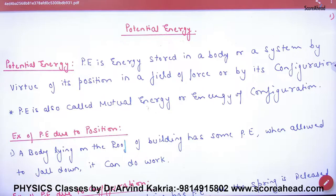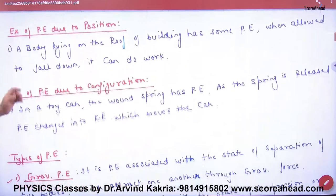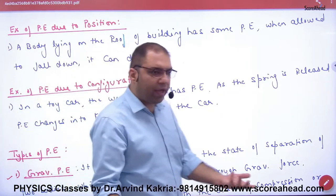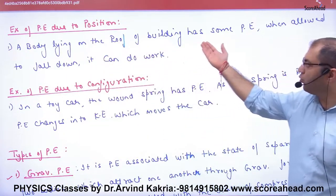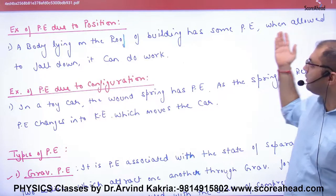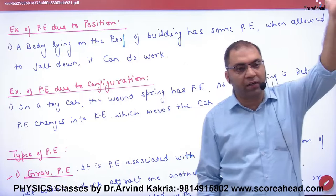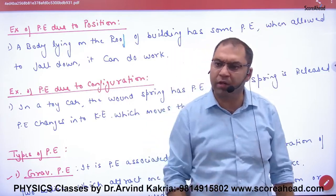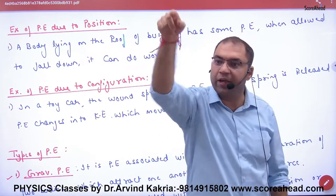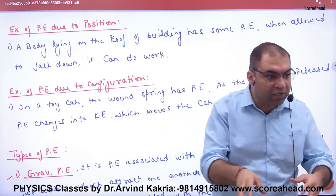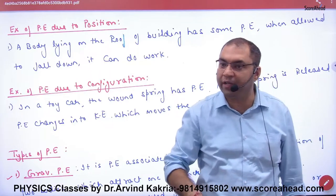Potential energy is also called mutual energy of configuration. Example of potential energy due to position: a body lying on the roof of a building has some potential energy. When allowed to fall down, it can do work. The stone is up there - you had to take the stone up, so energy is stored. Now put the stone down and it will show you work done.